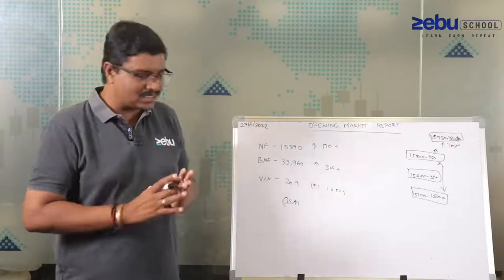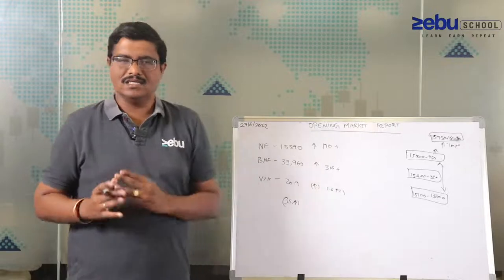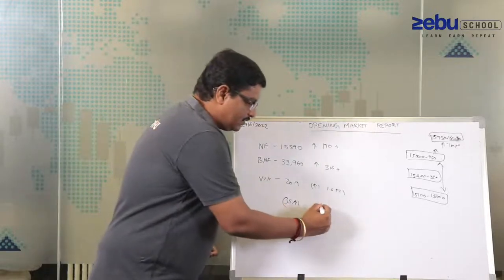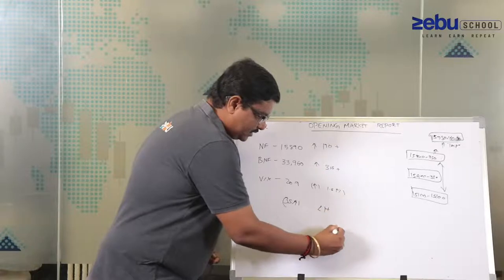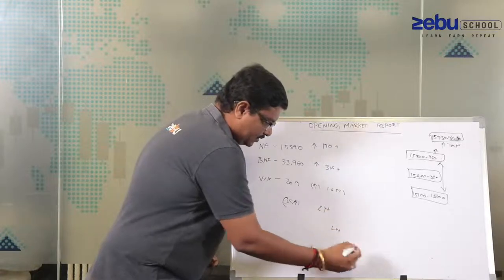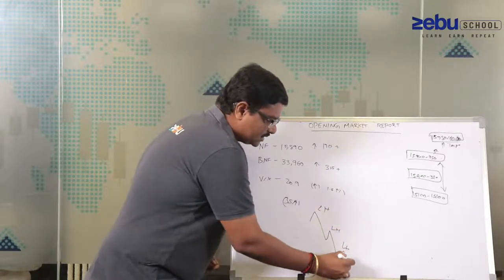Because why to short? Structurally market is in sell on rise. If you look at, it's something like higher, again it's making lower high, again making lower high. So formation is something like this.